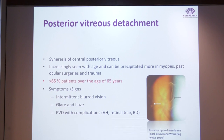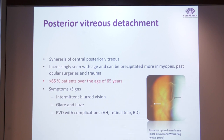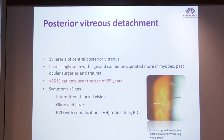Syneresis of the central posterior vitreous is increasingly seen with age and can be precipitated more in myopes, past ocular surgeries, or trauma. More than 65% of patients over the age of 65 years will have PVD. Symptoms include intermittent blurred vision, glare or haze, and PVD with complications such as vitreous hemorrhage, retinal tear, or retinal detachment.